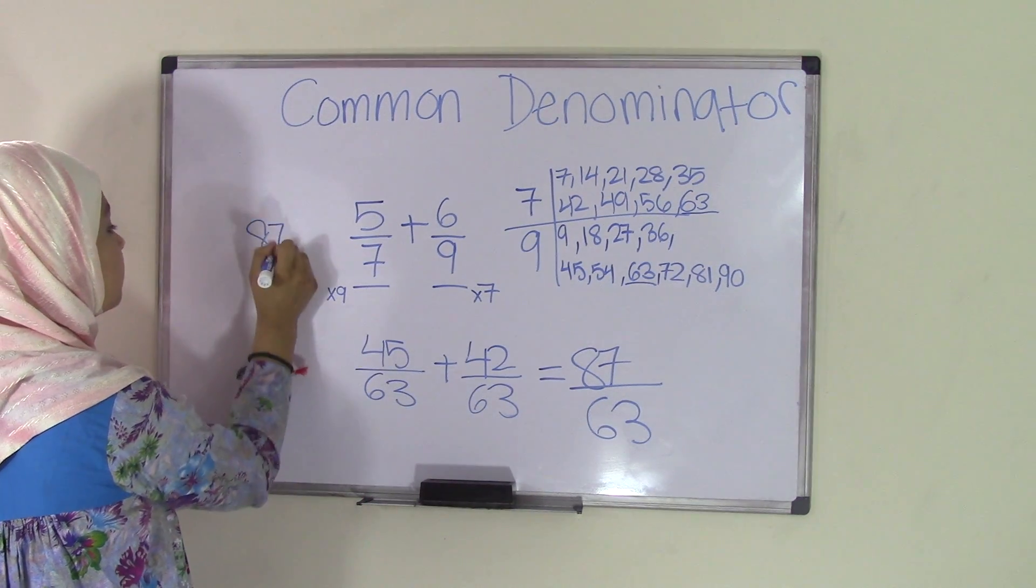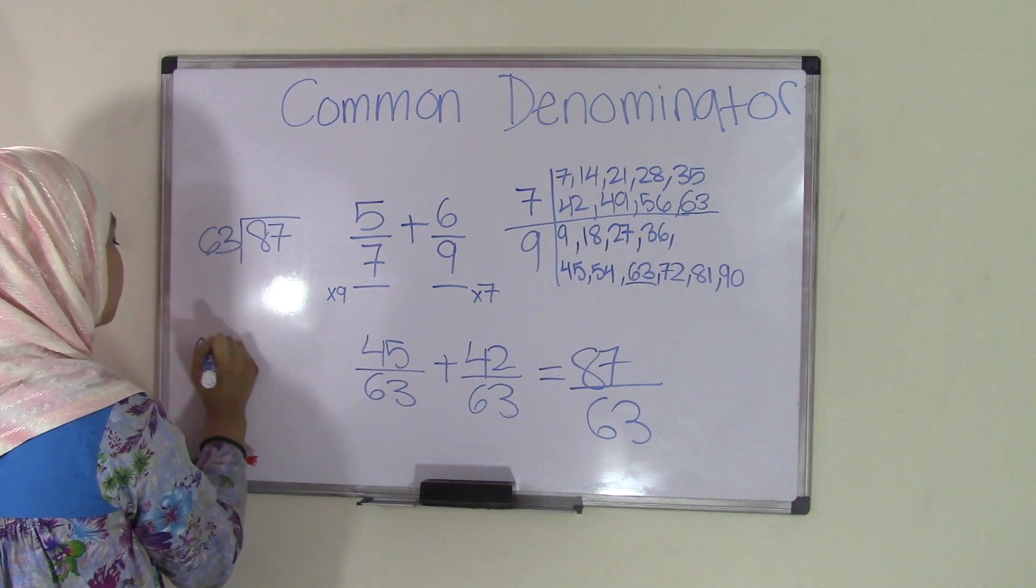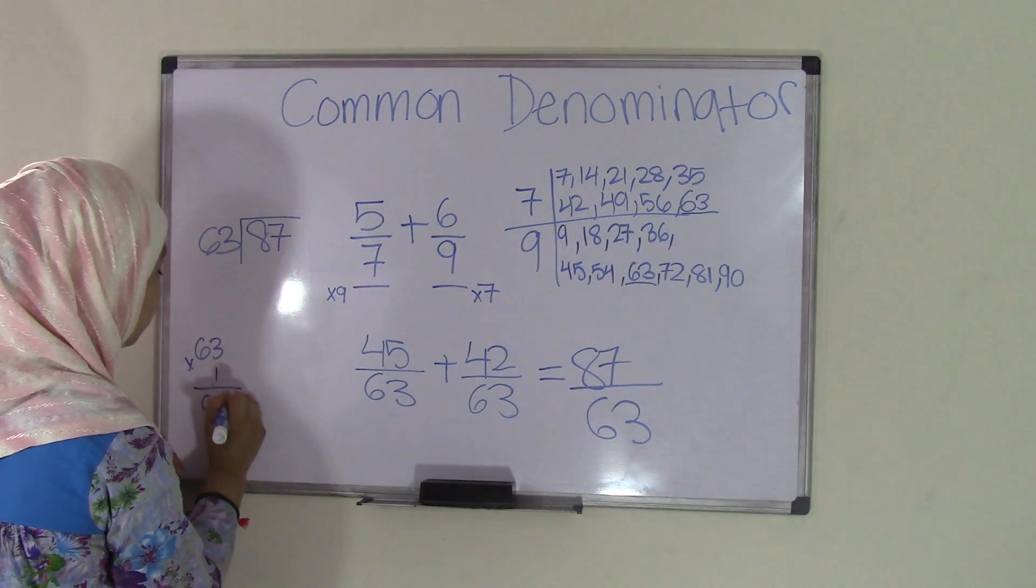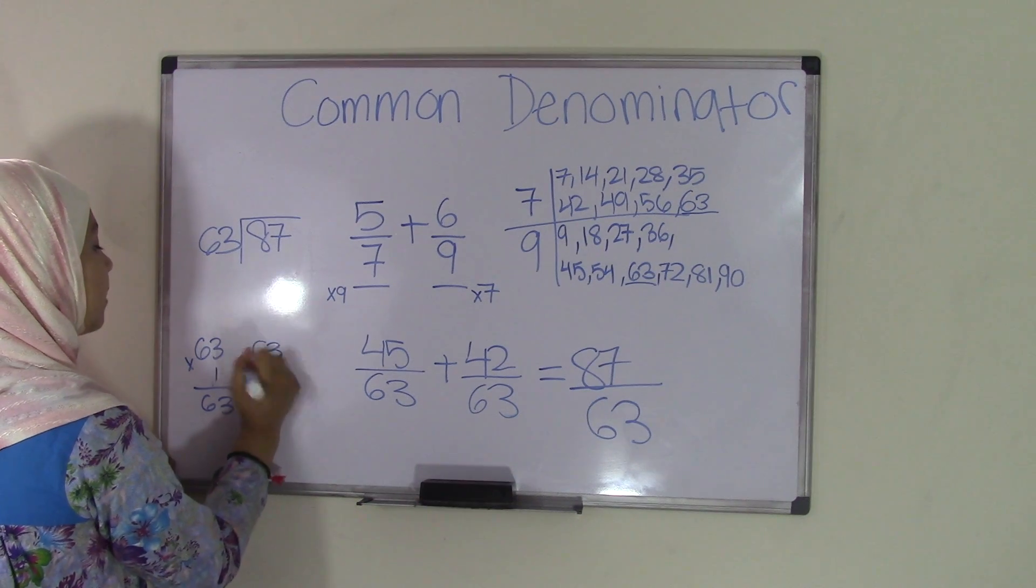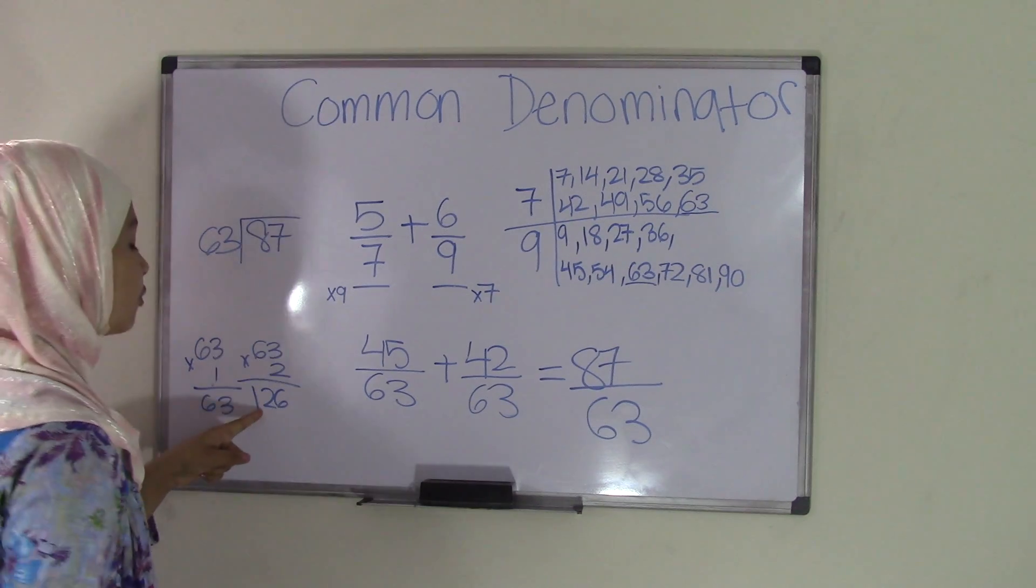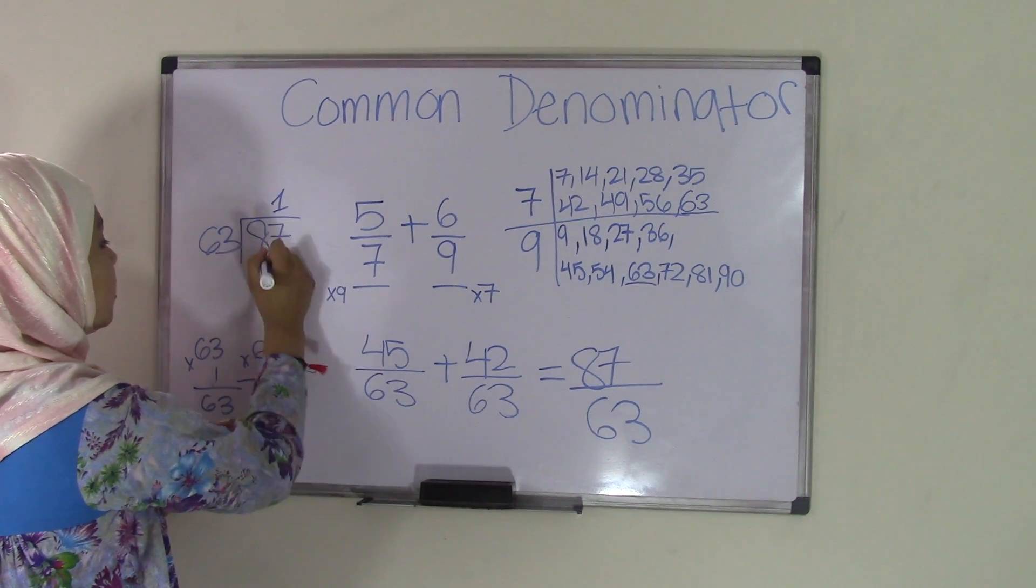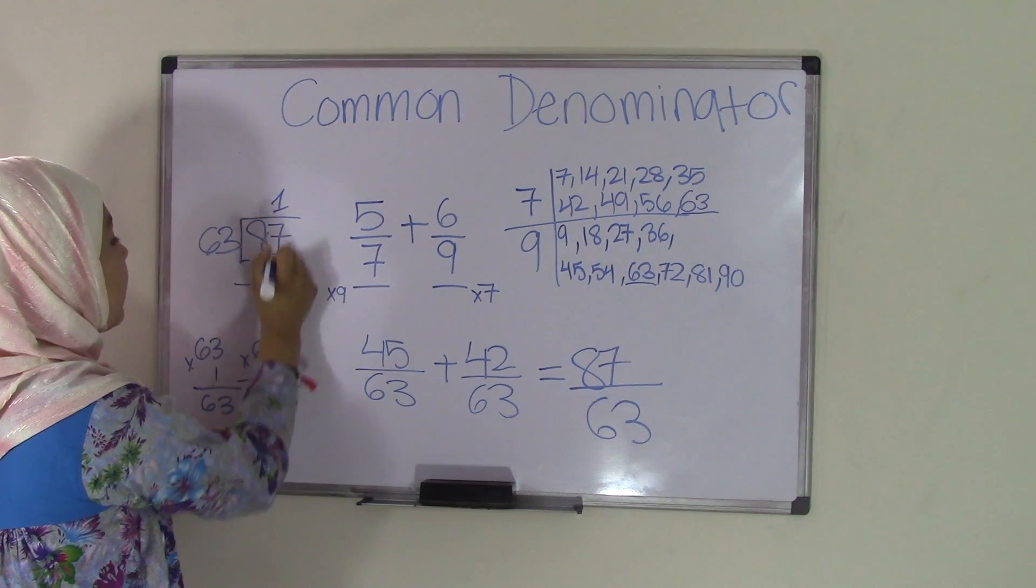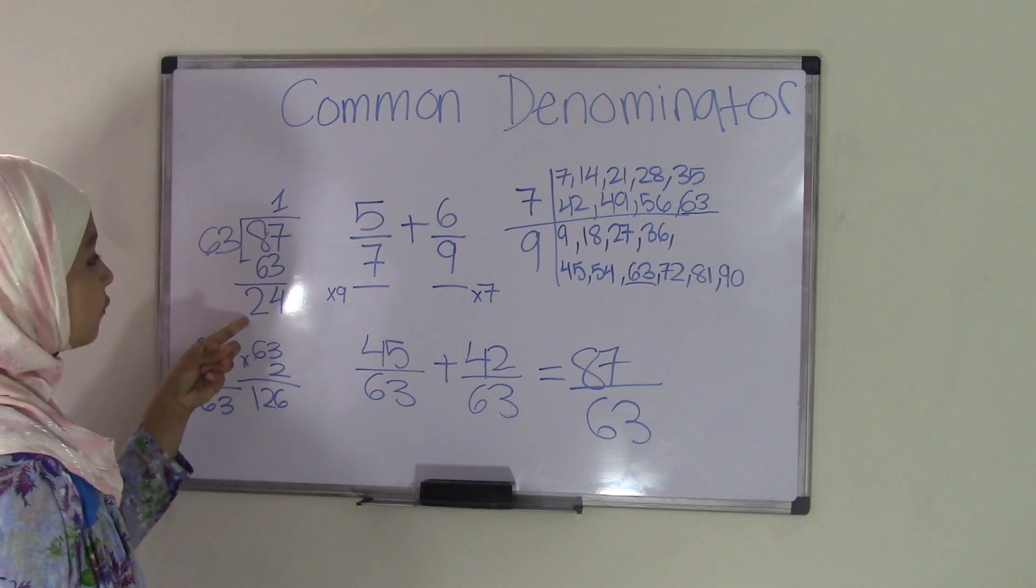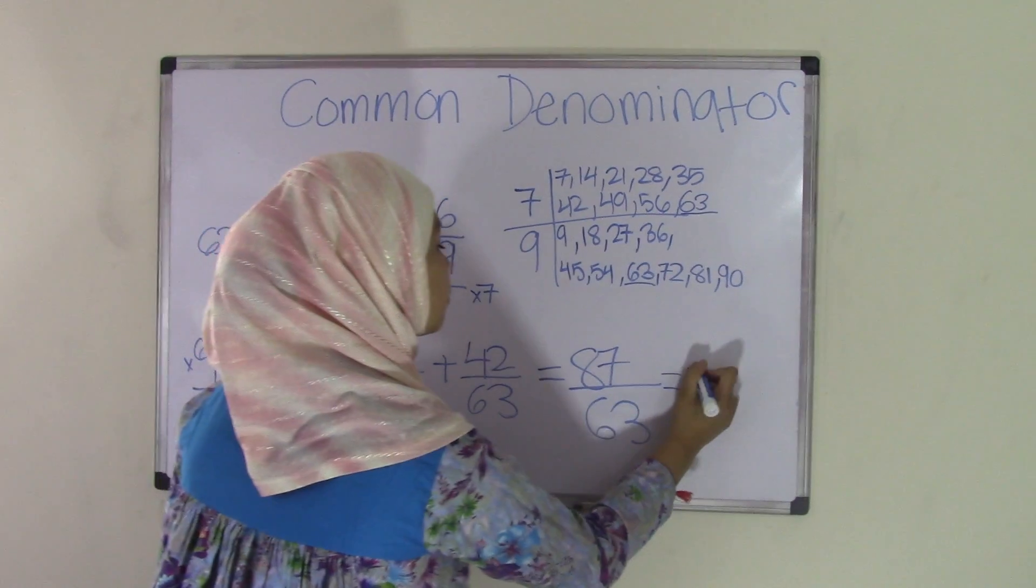So 87 divided by 63. 63 times 1 equals 63. If I do 63 times 2, 3 times 2 is 6, and 6 times 2 equals 12, I'll get 126. 126 is greater than 87, so I'm going to use 63 times 1 to get 63. Subtract that. 7 minus 3 is 4, 8 minus 6 is 2. I'm left with a remainder of 24.